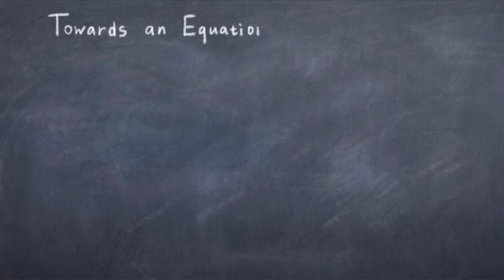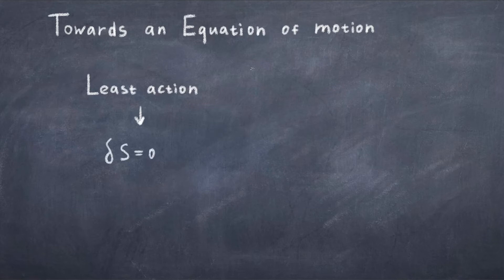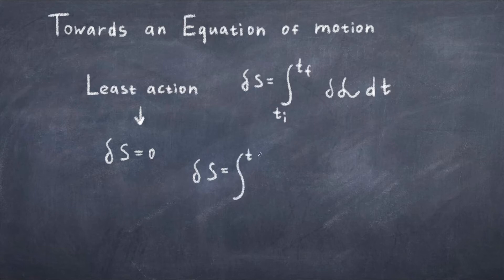What we need is an equation of motion like Newton's second law. To obtain this we consider the principle of least action. Mathematically, what you do is consider a small variation of the path, thus a small variation of the action. Then we want to find the minimum action where the variation of the action is zero, written as delta S equals zero. To give you a feeling of this procedure, let's look at the most important steps to obtain an equation of motion. First, you write the variation of the action delta S as the integral from time t-initial to time t-final of the variation of the Lagrangian delta L with respect to dt.